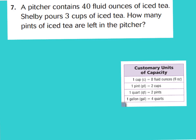Let's do one more together — question number 7. A pitcher contains 40 fluid ounces of iced tea. Shelby pours 3 cups of iced tea. How many pints of iced tea are left in the pitcher? She starts with 40 ounces and pours 3 cups away, but we need to know how many ounces she's taking away. If 1 cup is 8 ounces, then 3 cups would be 8 times 3, which is 24 ounces.